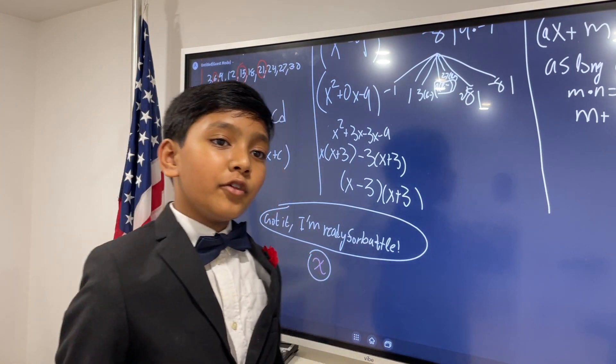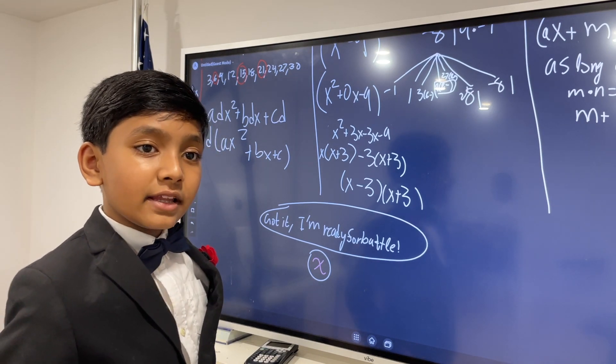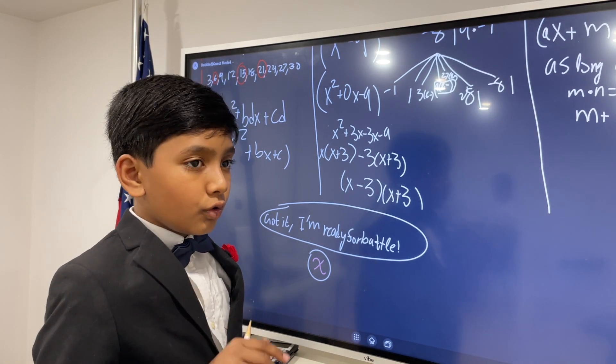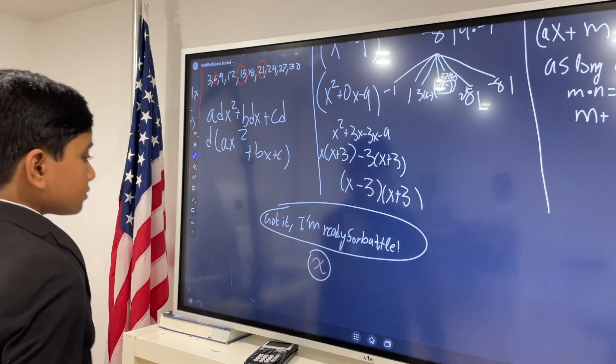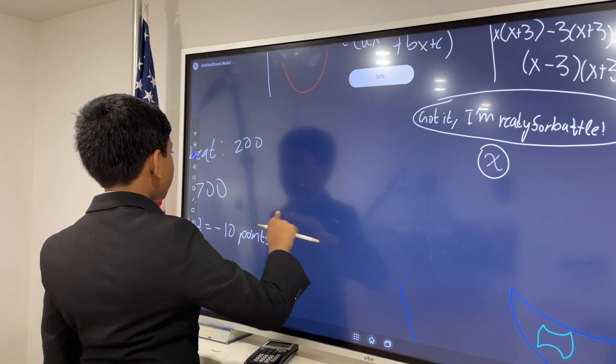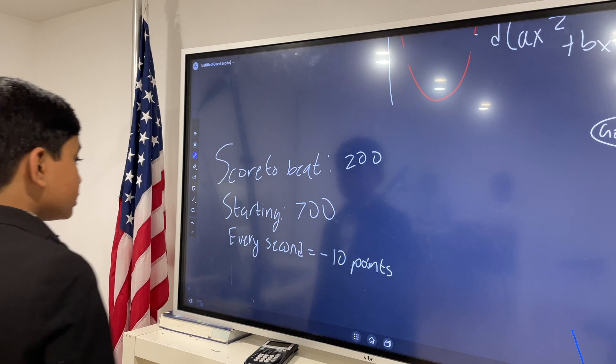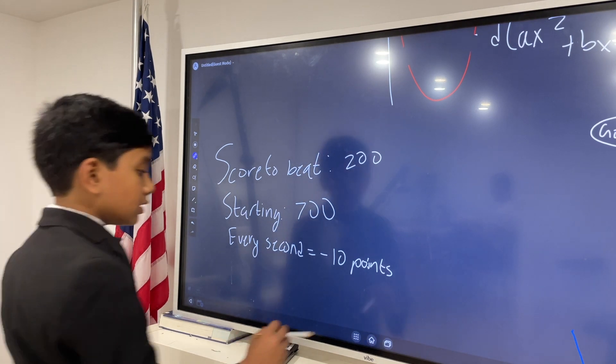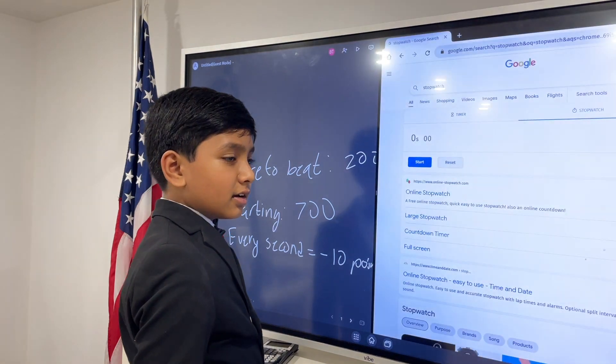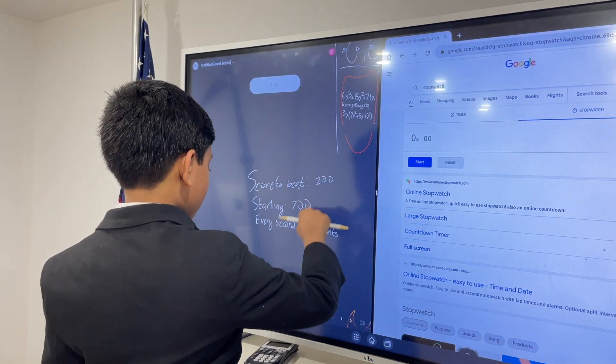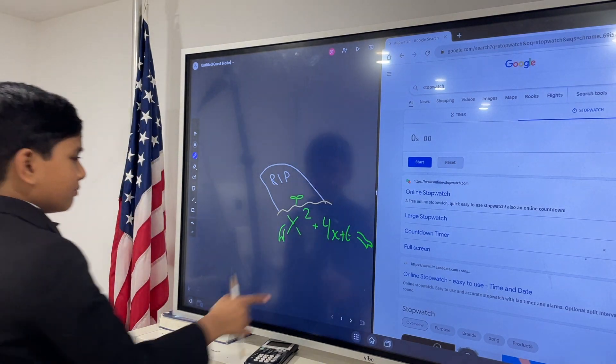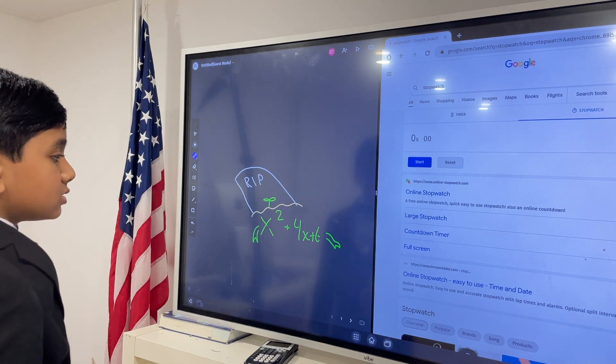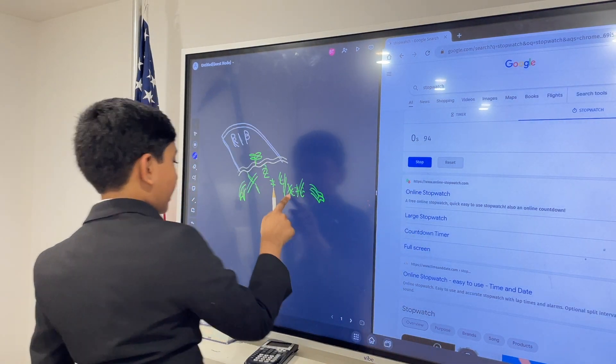Are you guys ready for battle? I'll give you 5 seconds to decide. If not, you can try and replay this video until you think you're ready. 5, 4, 3, 2, 1. Alright. So, let's see what the rules are. Score could be 200, starting with 700, and every second it takes us in battle is negative 10 points. Let's start up the stopwatch, everybody. So, let's see our first one. Looks pretty mangled. I think I can read it. It says x squared plus 4x plus 6.